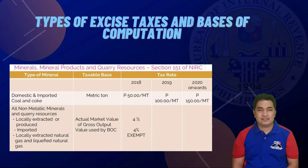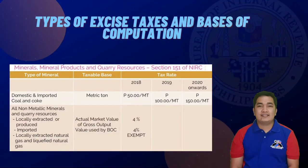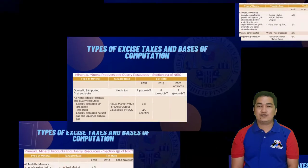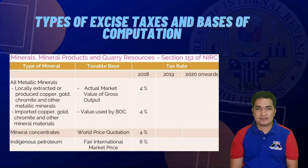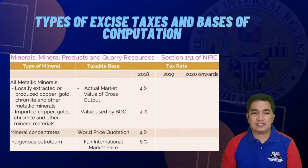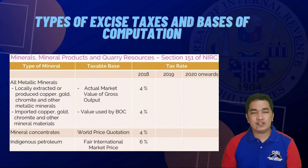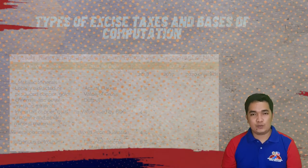All non-metallic minerals and quarry resources are taxed at 4% based on the actual market value of gross output used by BOC, except for locally extracted natural gas and liquefied natural gas which are exempt from excise tax. All metallic minerals are taxed at 4% but differ on the taxable base. For locally extracted or produced copper, gold, chromite, and other metallic minerals, it is based on the actual market value of gross output; for imported ones, based on the value used by the BOC; and for mineral concentrates, based on the world price quotation.